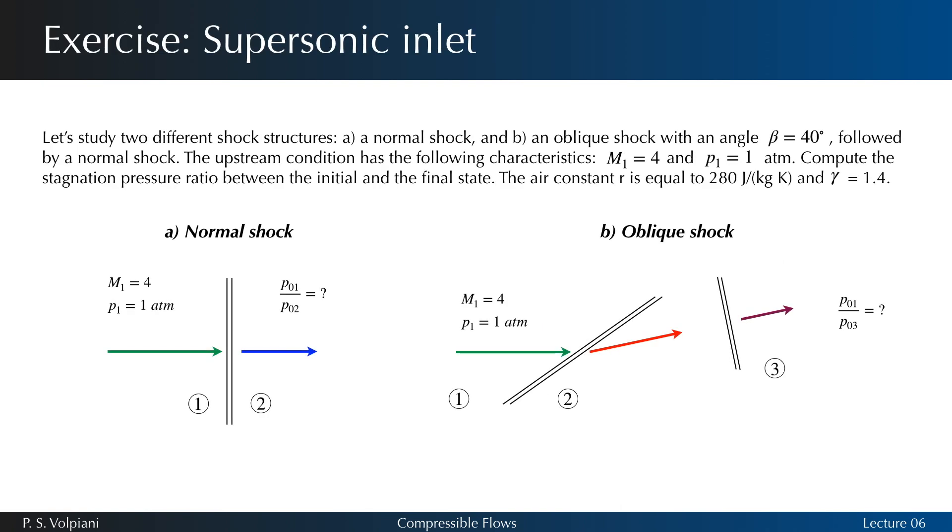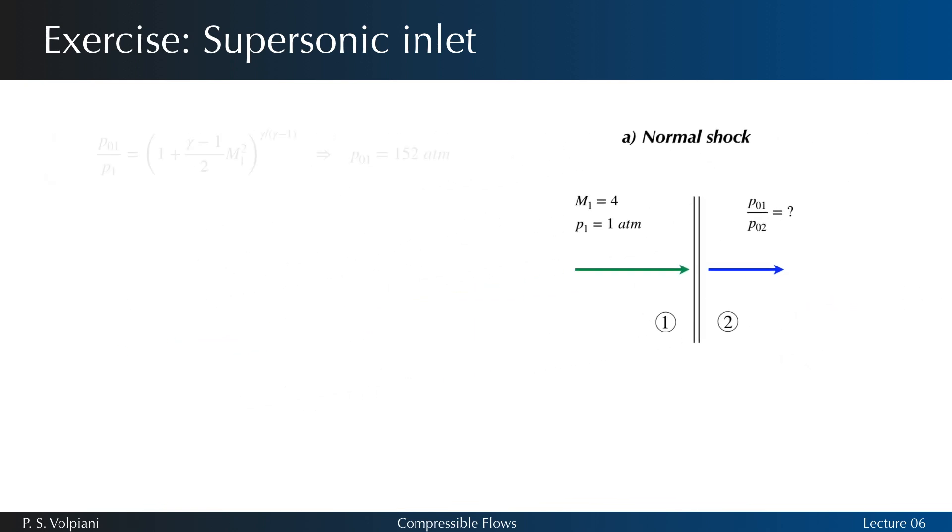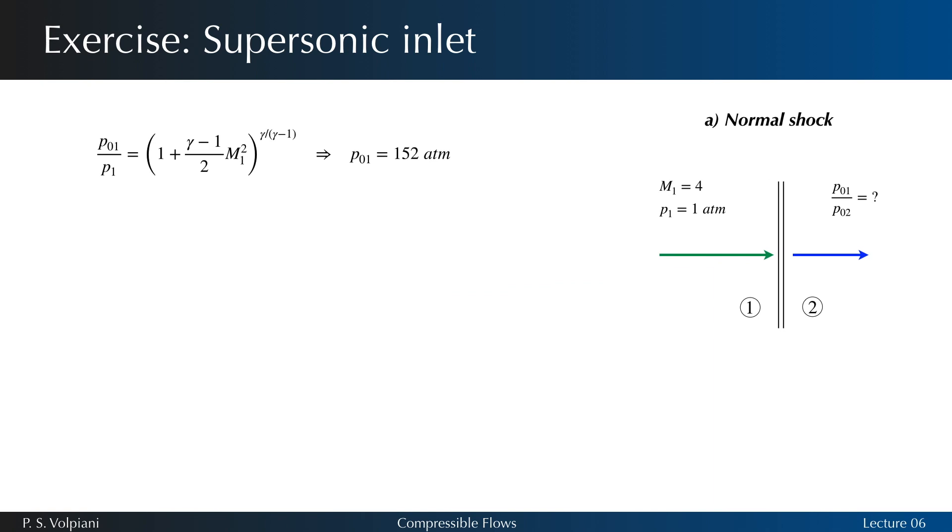Let's do an exercise now. Let's study two different shock structures: a normal shock and an oblique shock with angle beta equals 40 degrees followed by a normal shock. The upstream condition has the following characteristics: M1 equals 4 and P1 equals 1 atmosphere. Compute the stagnation pressure ratio between the initial and the final state. We can easily compute the stagnation pressure P01 using the following formula.